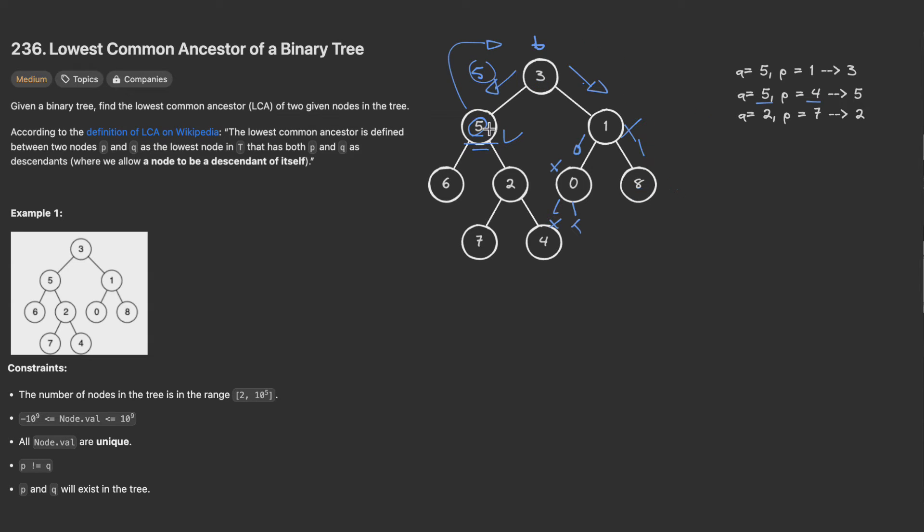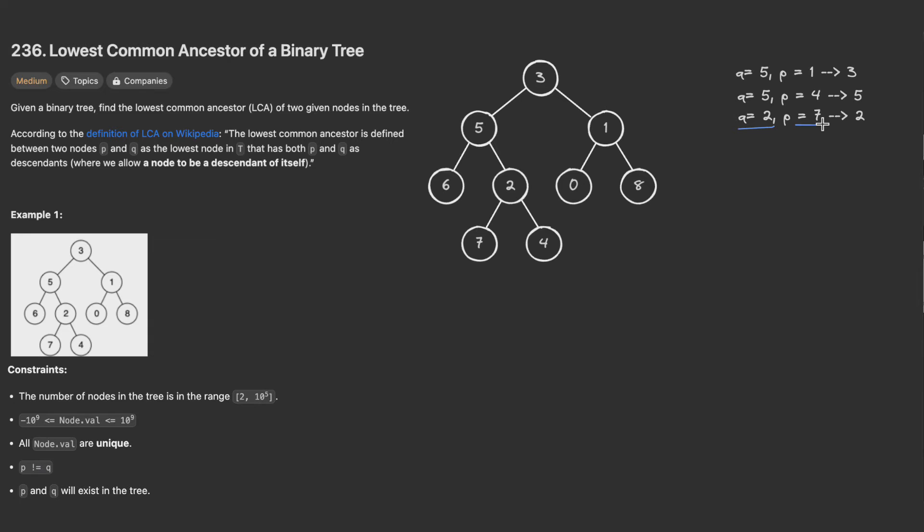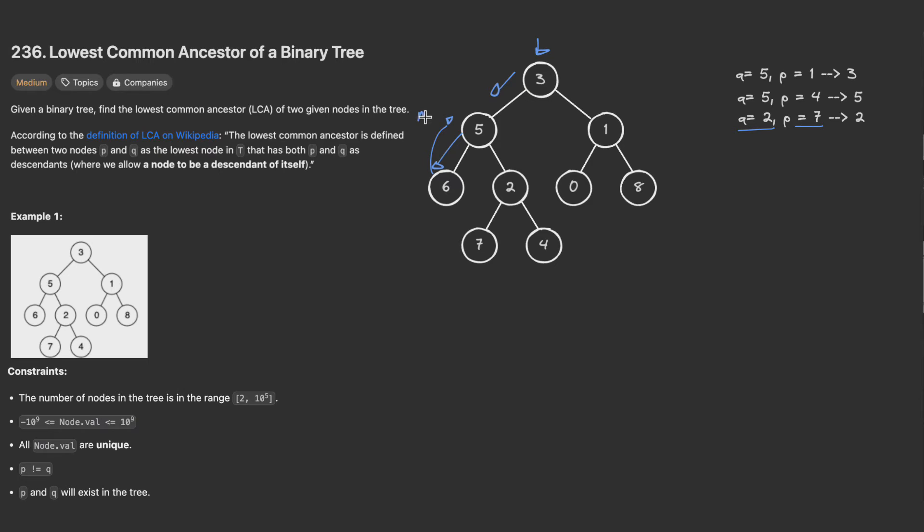Let's try the third one. Now let's check Q equals 2 and P equals 7. We start from here. Does this value equal 2 or 7? No. So we go left. Does 5 equal 2 or 7? No. We go left. Does 6 equal 2 or 7? No. We go left and return null.